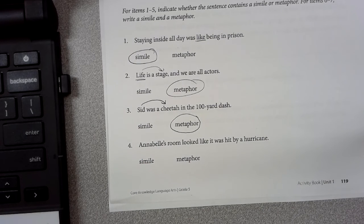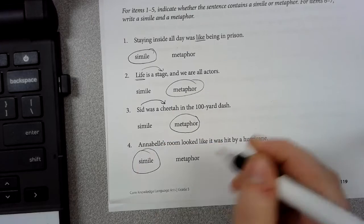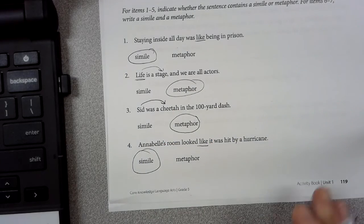Number four: Annabelle's room looked like it was hit by a hurricane. That's right, it's a simile because it uses the word like.